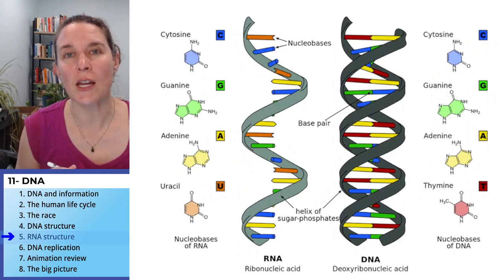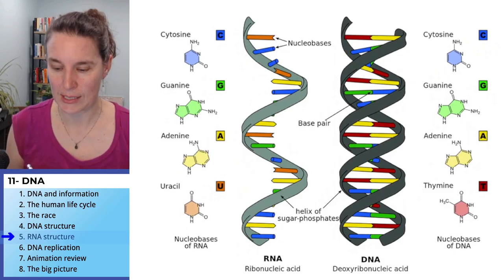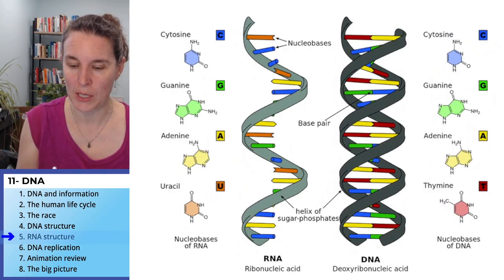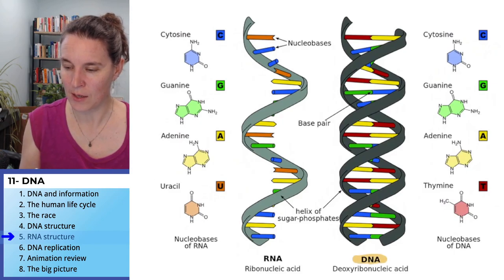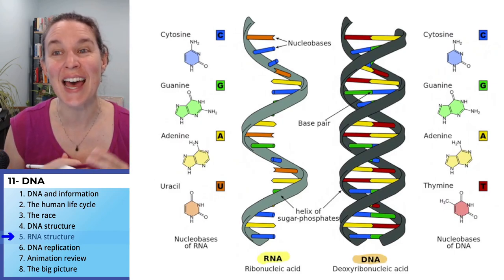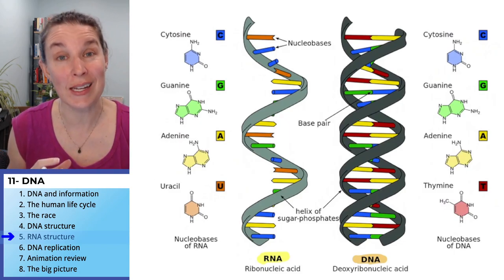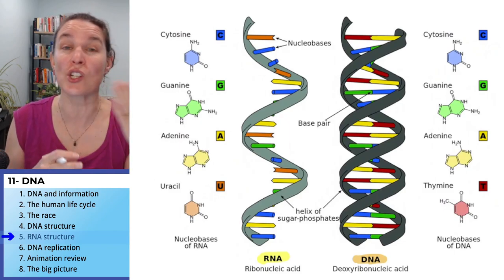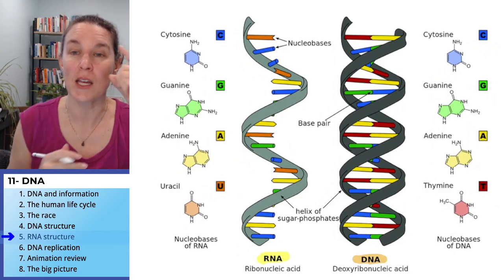This first image shows the primary differences between DNA and RNA. Down here at the bottom, we have the DNA and the RNA. You'll notice that the RNA is almost identical, but it's usually just one strand as opposed to that double strand.